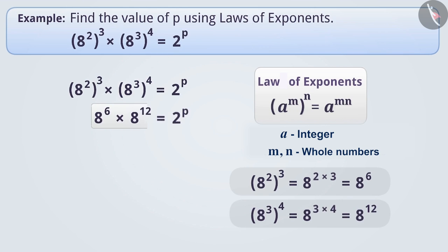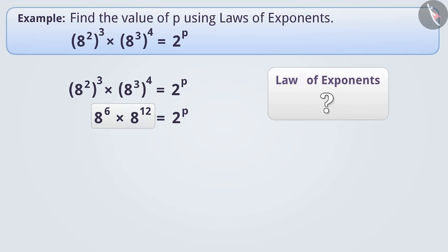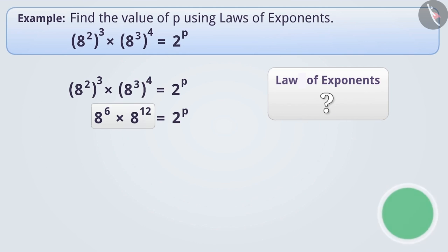Now we will solve 8 to the power of 6 multiplied by 8 to the power of 12. We will use the law: a to the power of m multiplied by a to the power of n, which is equal to a to the power of m plus n.